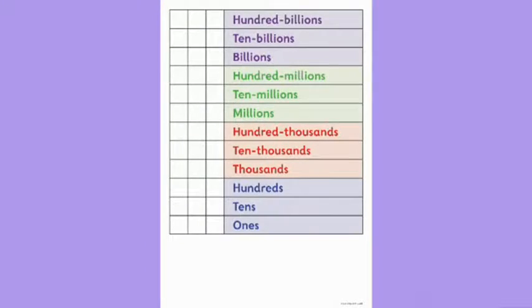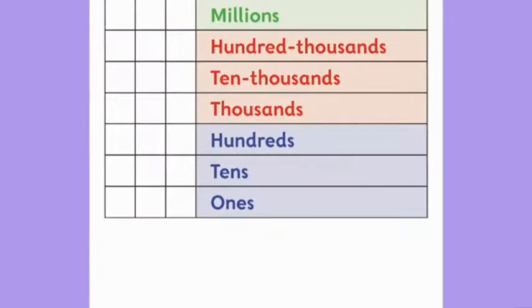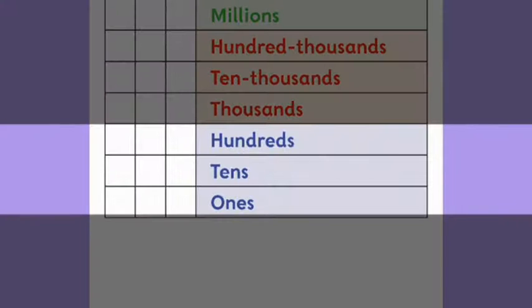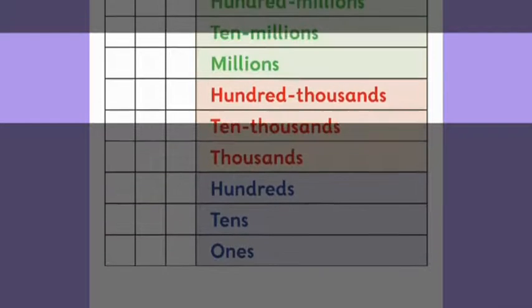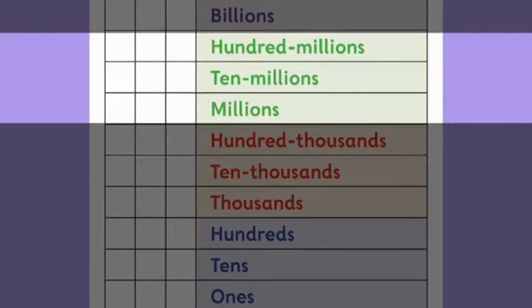The 3 digits at the far right of a number always have a value in the hundreds or less — they are single units, tens, or hundreds. The next 3 digits always have a value in the thousands: single thousands, 10 thousands, or 100 thousands. And the next 3 numbers are always in the millions: single millions, 10 millions, or 100 millions.